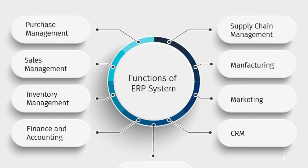Now it is time to discuss the functions of ERP. The functions of an ERP system encompass a wide range of activities aimed at streamlining and integrating core business processes within an organization. First, integration — ERP systems integrate various business functions and departments such as finance, human resources, manufacturing, supply chain management, inventory management, sales, and customer relationship management into a single unified platform, eliminating departmental silos.